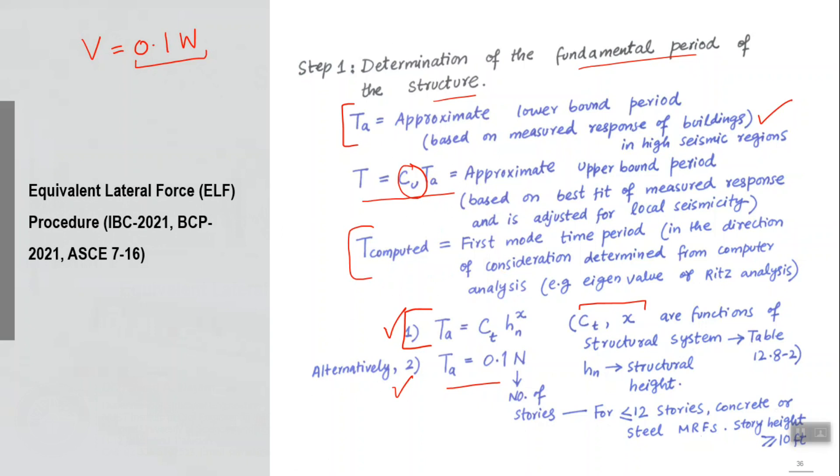There are three time periods: one is Ta, which is approximate time period calculated from the empirical expression; another T, which is coming from the modal analysis, the actual first mode time period based on your M matrix and K matrix, that is called T computed; and there is an upper limit on Ta, which is Cu times Ta. There are three time periods, and I will explain in the next slide how you will use any of these in what case.